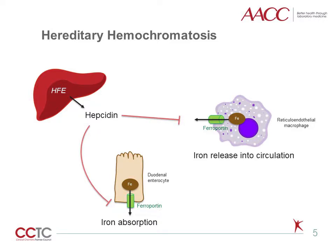Hereditary hemochromatosis is also known as genetic iron overload disease. Most subtypes of hemochromatosis are caused by an abnormal production of hepcidin, which is a liver protein regulated by the gene HFE. Hepcidin decreases the expression of ferroportin, which is an iron transport protein that mediates the release of iron from enterocytes and macrophages. Therefore, in the presence of hepcidin, iron absorption from the small bowel and release from macrophages are tightly regulated.